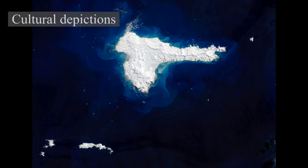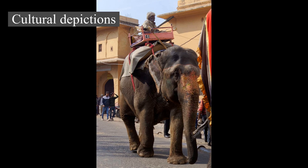Cultural Depictions: In many cultures, elephants represent strength, power, wisdom, longevity, stamina, leadership, sociability, nurturance, and loyalty. Several cultural references emphasize the elephant's size and exotic uniqueness. For instance, a white elephant is a byword for something expensive, useless, and bizarre. The expression 'elephant in the room' refers to an obvious truth that is ignored or otherwise unaddressed. The story of the blind men and an elephant teaches that reality can be observed from different perspectives.